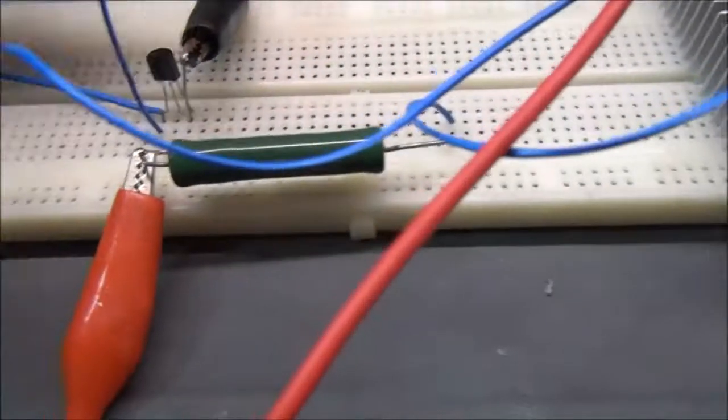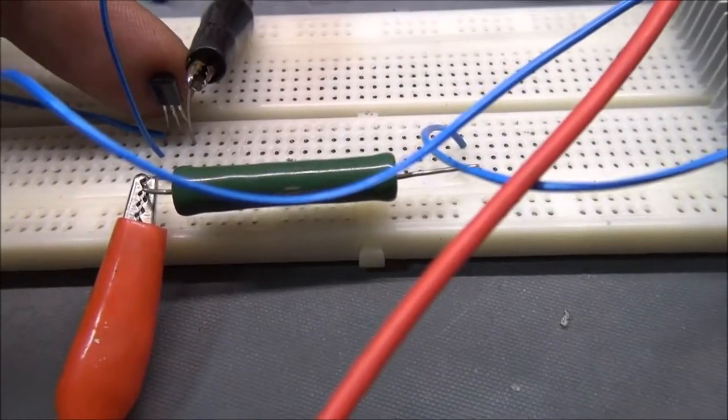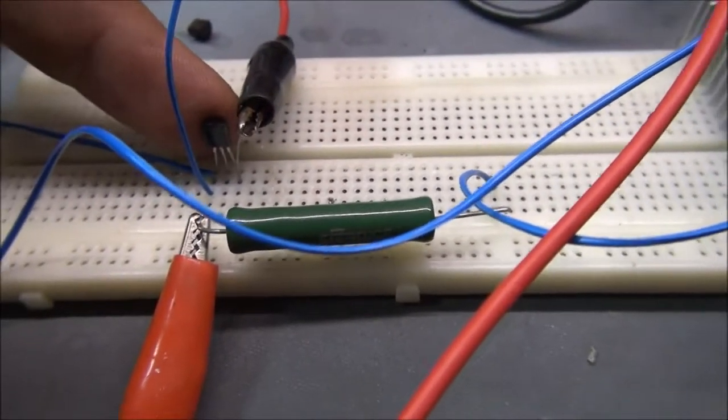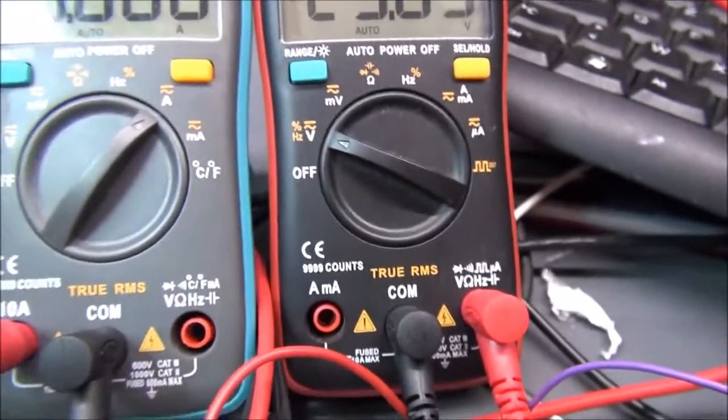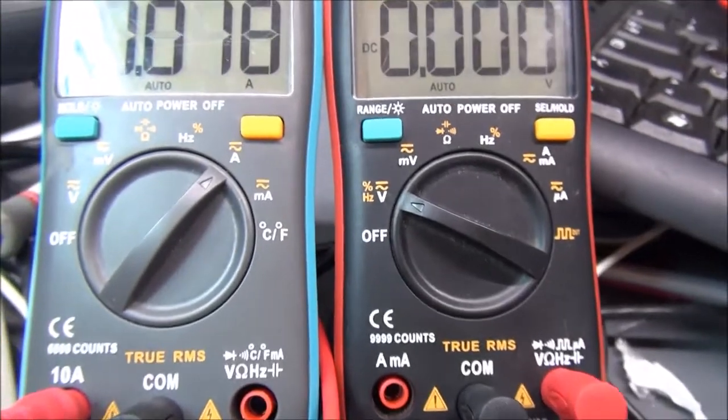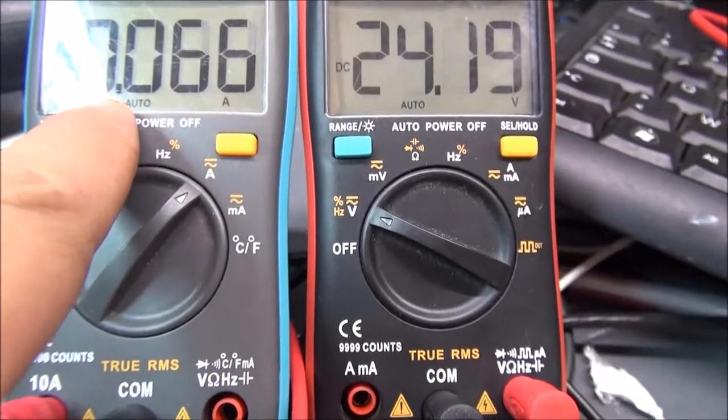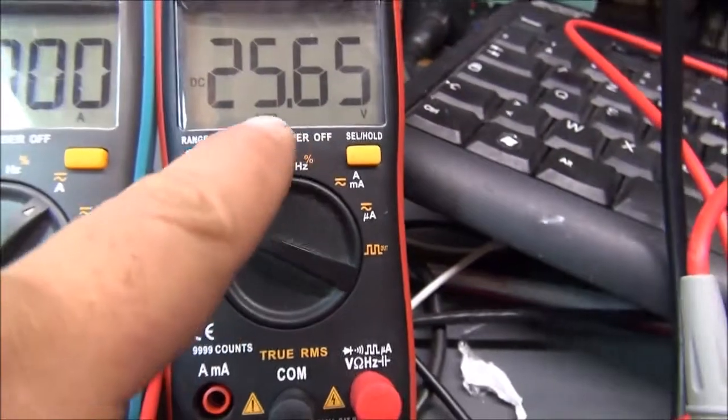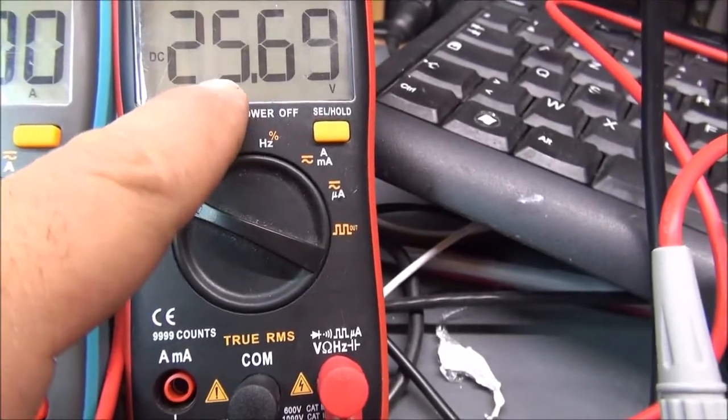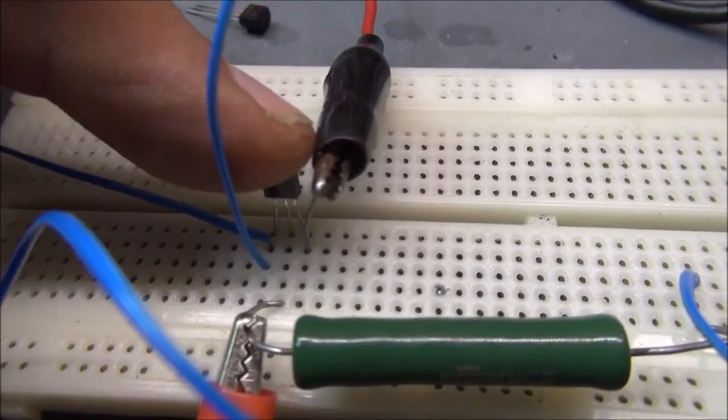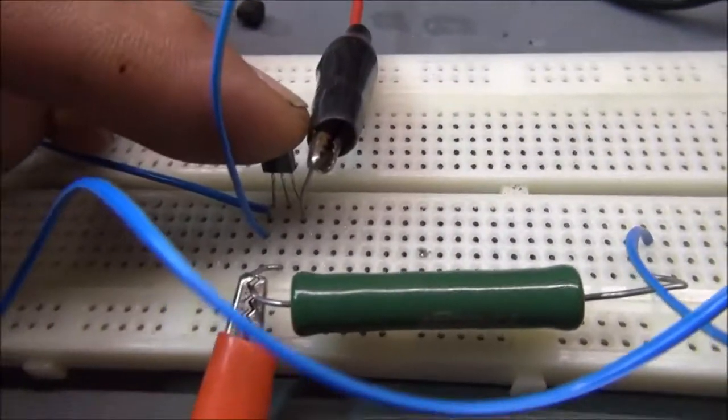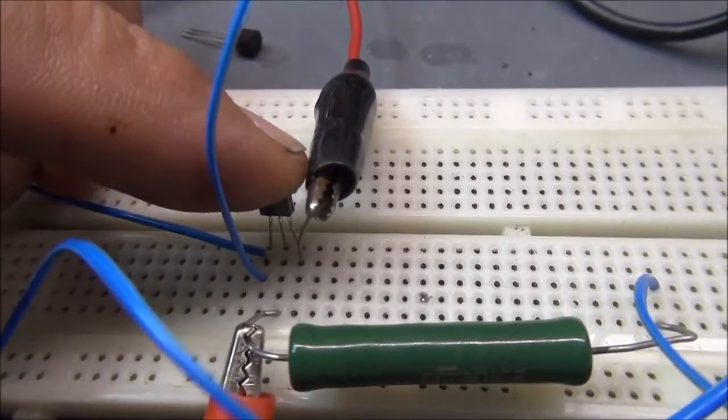You can see this transistor which is becoming very hot is able to hold one amp through the emitter and collector, and 2.1 volts. So this transistor is a really one watt transistor and it's a real BC639.